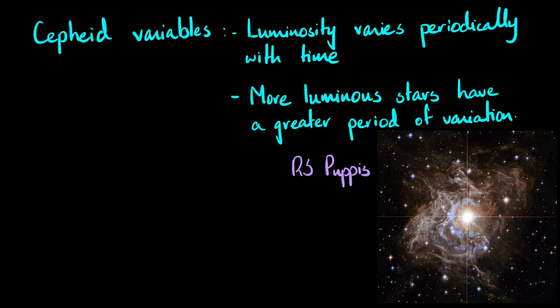This star is actually called RS Puppis. I don't know who came up with these names, but this is one of the brightest Cepheid stars in our Milky Way galaxy. This is very bright and has a period of almost 41.5 days. This is not for you to remember - this is just so you can understand what we're studying here.